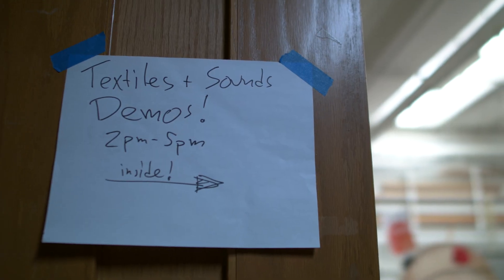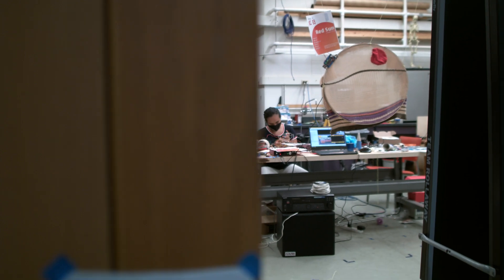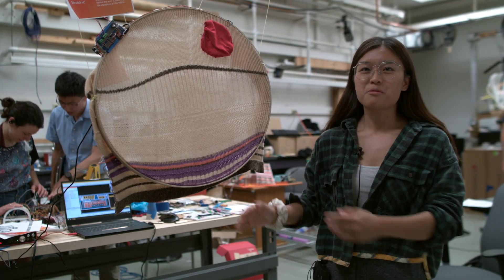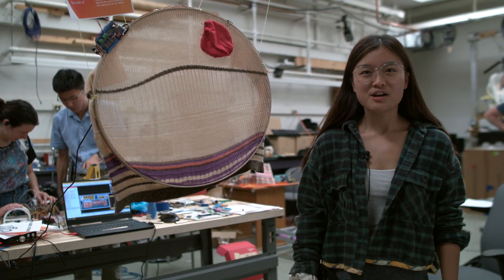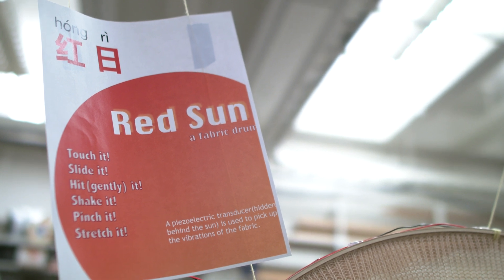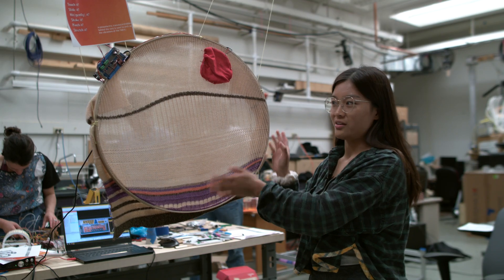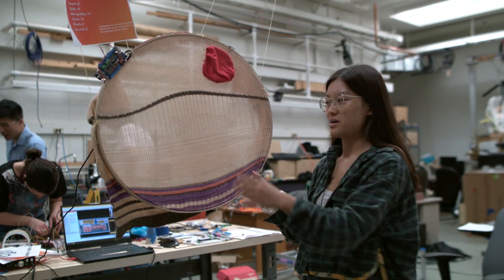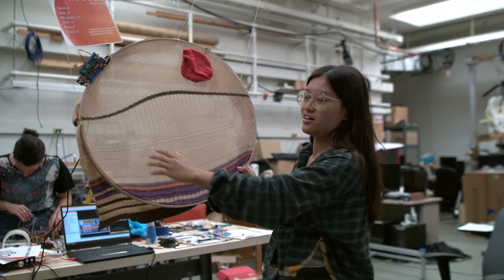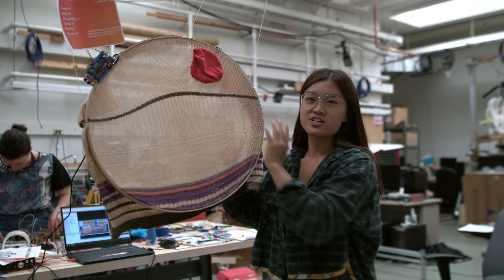I'm a second year master's student in R.I. and also incoming Ph.D. So this is our small project based on this lab jam. It's called red sound. We have a fabric drum, so the whole surface is a drum and once we strike on it or slide on it or just a little gentle touch on it, it will make some different sounds based on the different touching pattern.